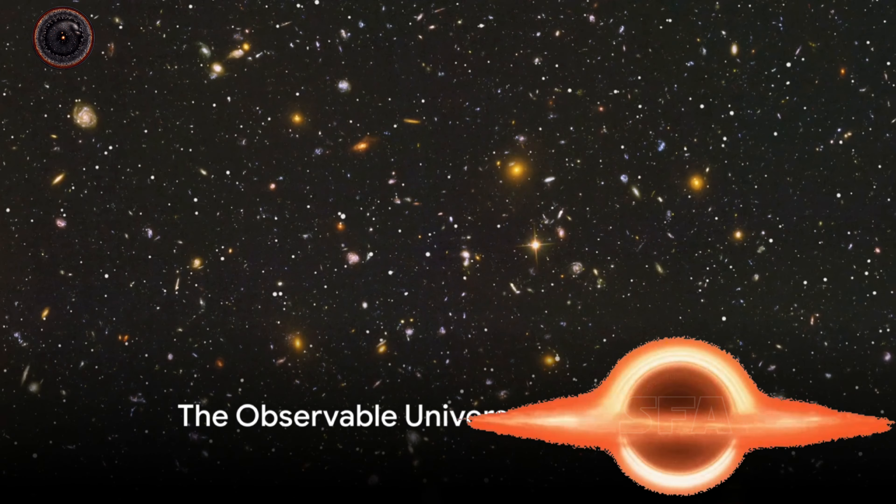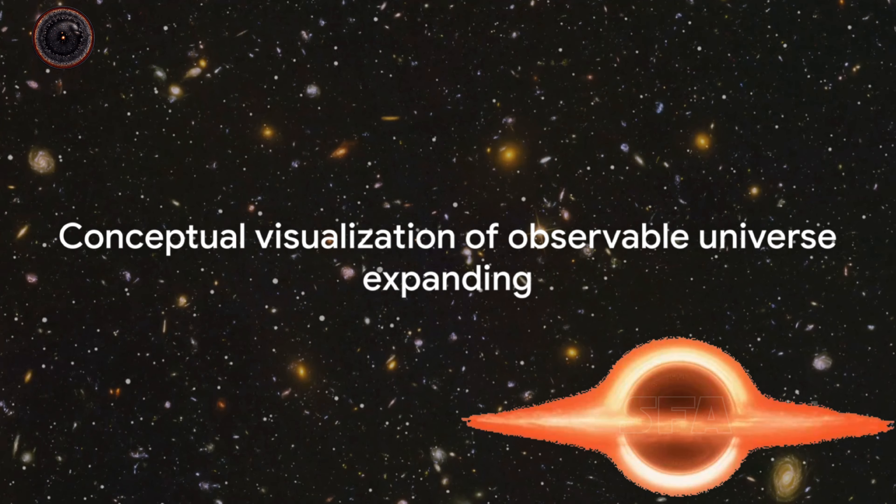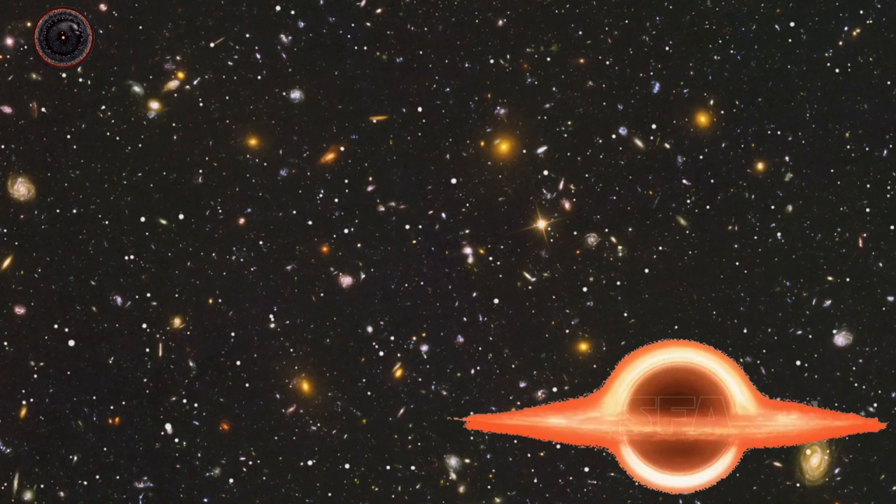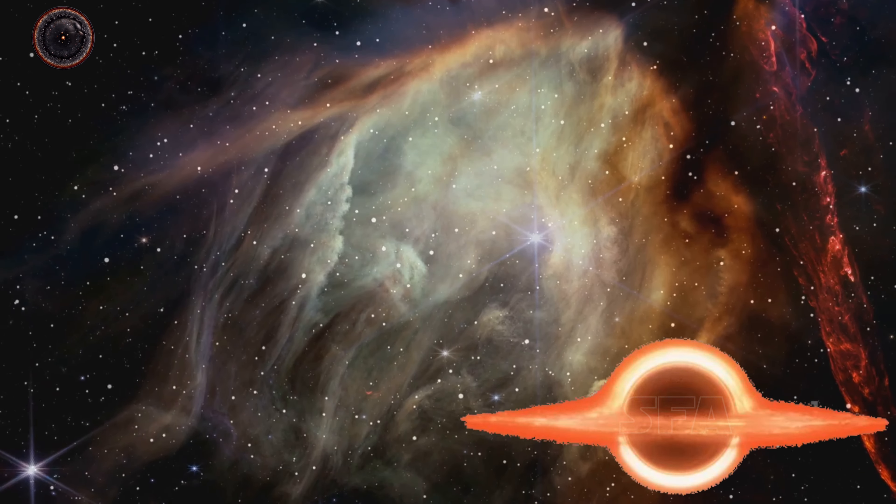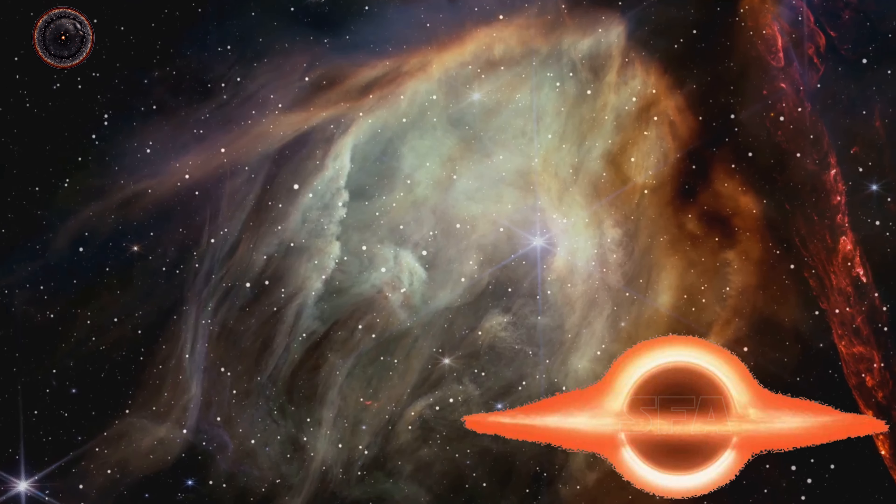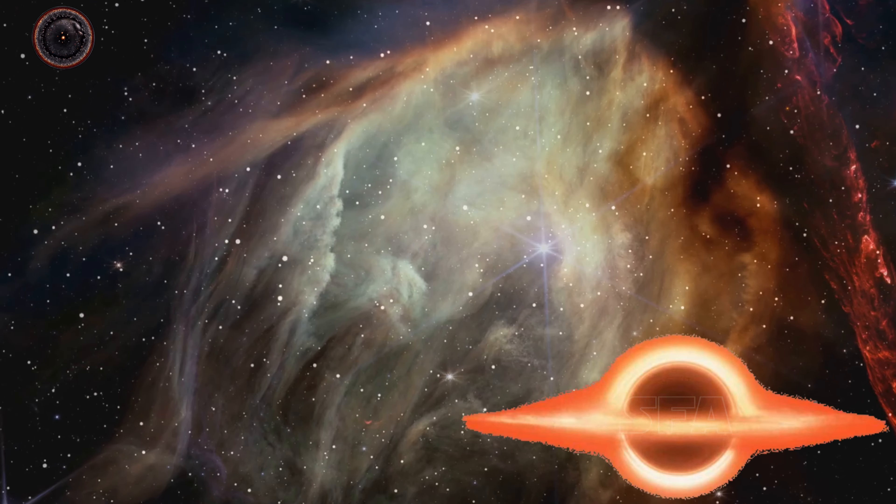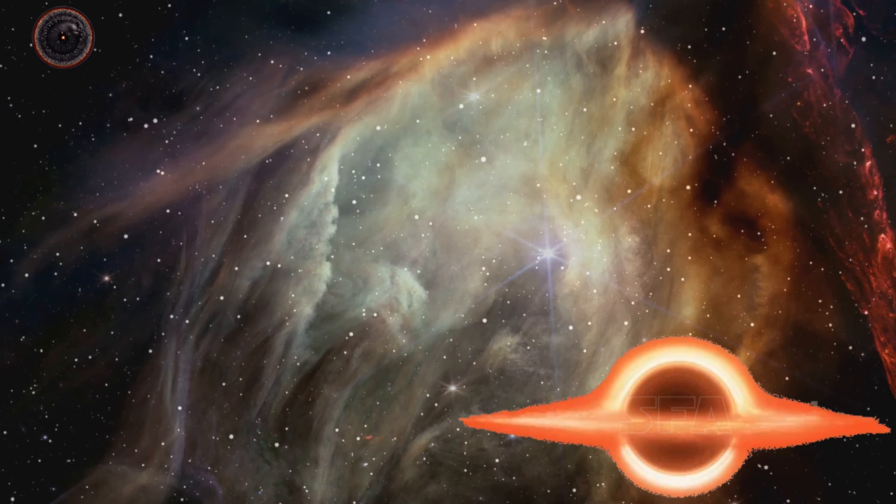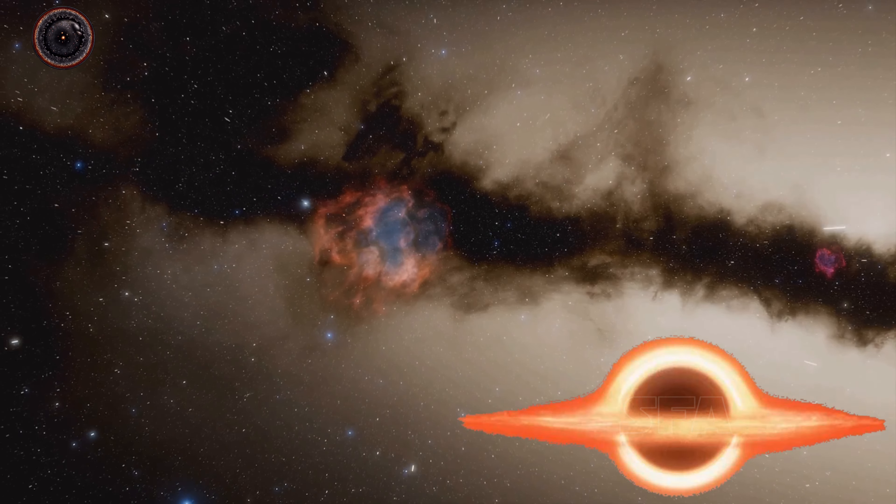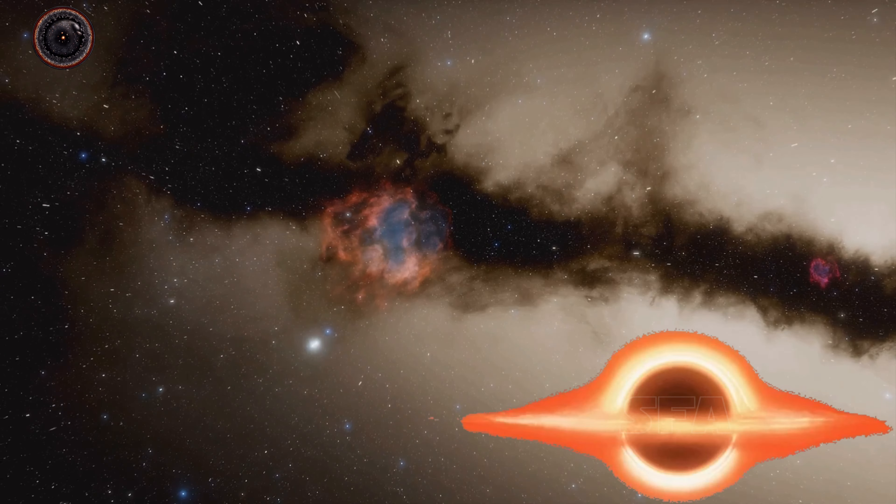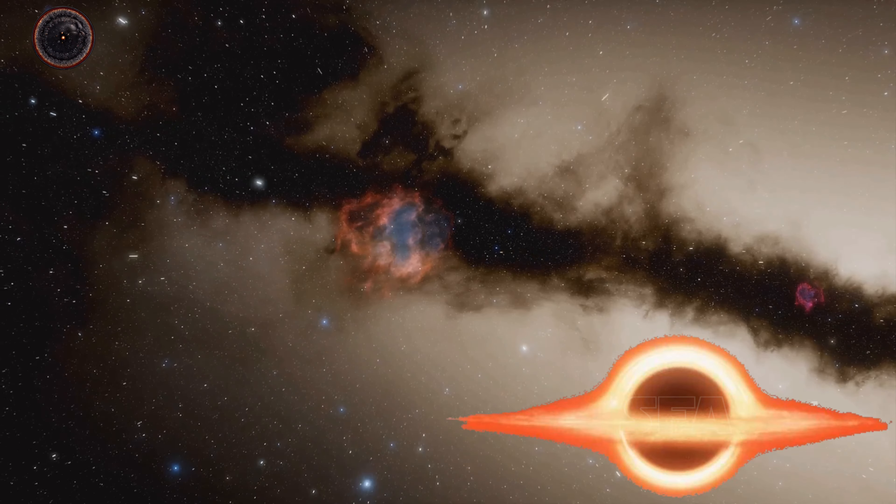But how far can we see in this ever-expanding universe? Imagine standing on a hilltop, gazing at the horizon. No matter how hard you try, there's only so far your eyes can reach. Now replace that hilltop with Earth and the horizon with the edge of the universe. This is the concept of the observable universe, the part of the cosmos that we can theoretically observe from our vantage point here on Earth. The observable universe is like a cosmic bubble centered on us, and it's enormous, spanning about 96 billion light-years in diameter.